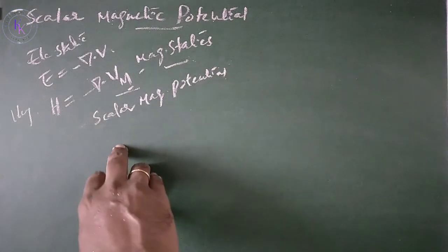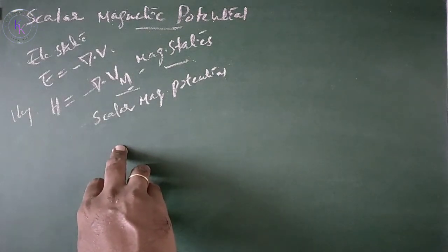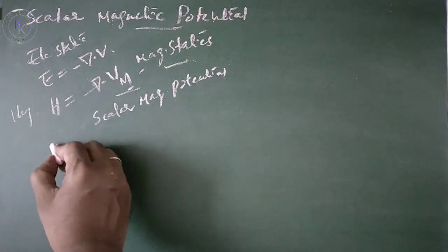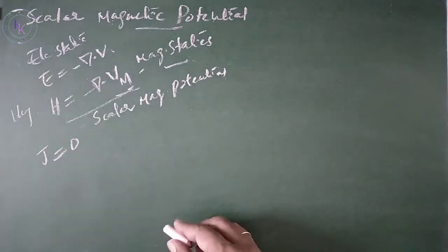In this relation, H is negative potential gradient, provided current density J equals 0.